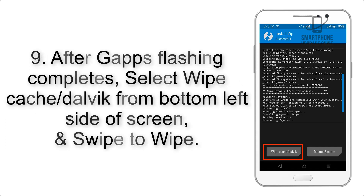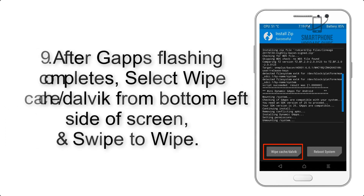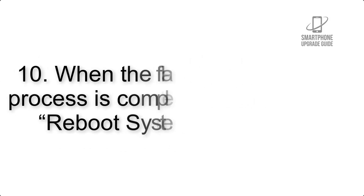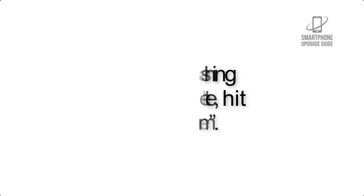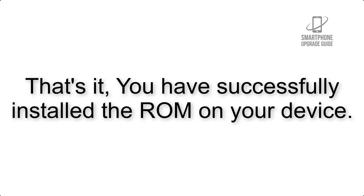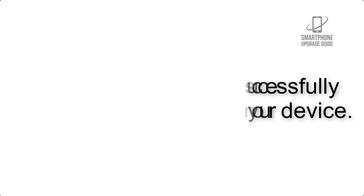Step 8: Flash the GApps zip package in the same manner. Step 9: After GApps flashing completes, select Wipe Cache and Dalvik from the bottom left side of the screen and swipe to wipe. Step 10: When the flashing process is complete, hit Reboot System. That's it — you have successfully installed the ROM on your device.